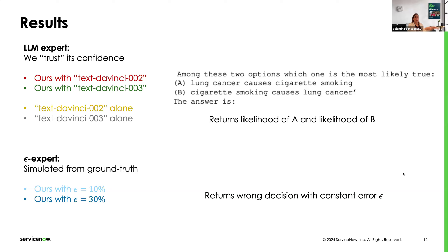We compare our method plugging in these LLM experts against a simple baseline where we just accept whatever the LLM expert tells us. We also tested a simulated expert to validate our approach — this simulated expert returns wrong directions of causality with a constant error rate epsilon. In the experiments, we tested epsilon equal to 10% and 30% error rate. We use this to validate the approach because this simulated expert is aligned with our assumptions, while the LLM expert might not be.